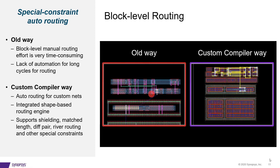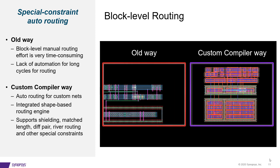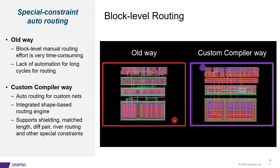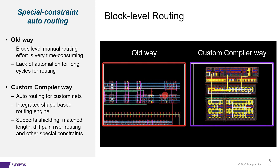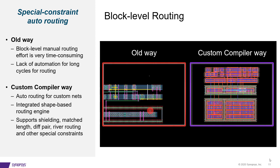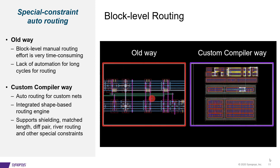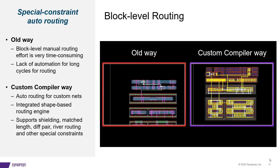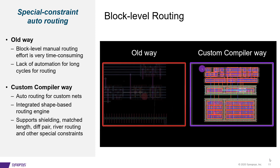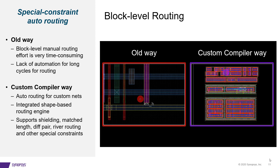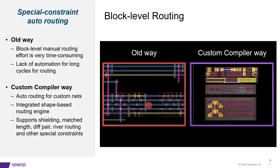Block-level routing in analog layout is another challenge — it is not just manual and time-consuming, but often has special constraints. For example, high-speed nets between blocks need to be shielded, or input nets for a matched circuit need to travel from block pins to devices with matched length. Layout engineers have been doing this manually because of the careful crafting required. As the red video box shows, this task is very tedious. Custom Compiler has an integrated shape-based routing engine supporting commonly used constraints like shielding and match length, enabling controlled and effective results while reducing layout effort.